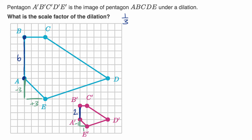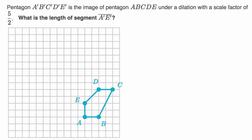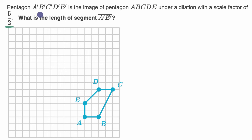Let's do another example. We are told that pentagon A'B'C'D'E' is the image of pentagon ABCDE under a dilation with a scale factor of five halves. What is the length of segment A'E'?